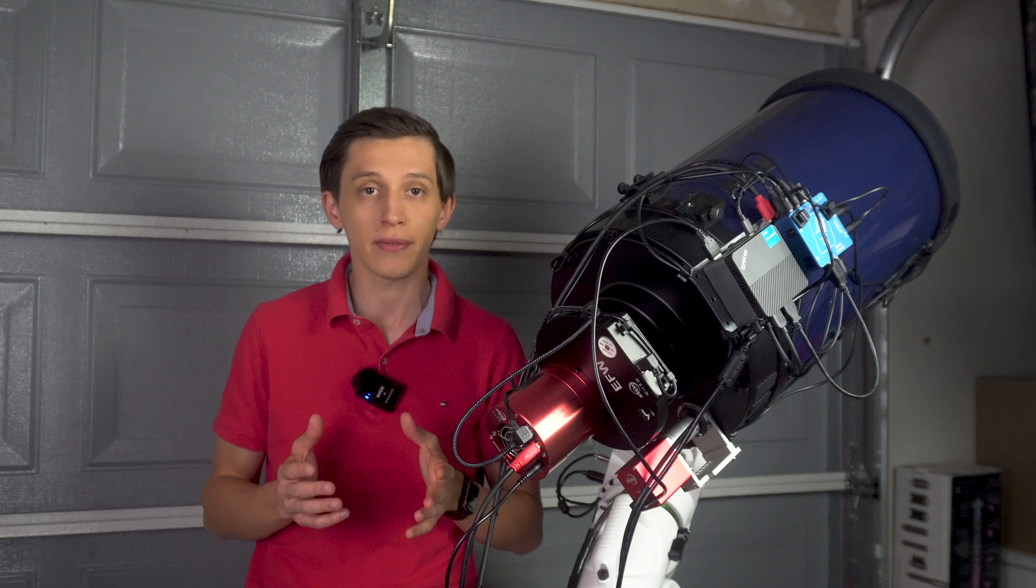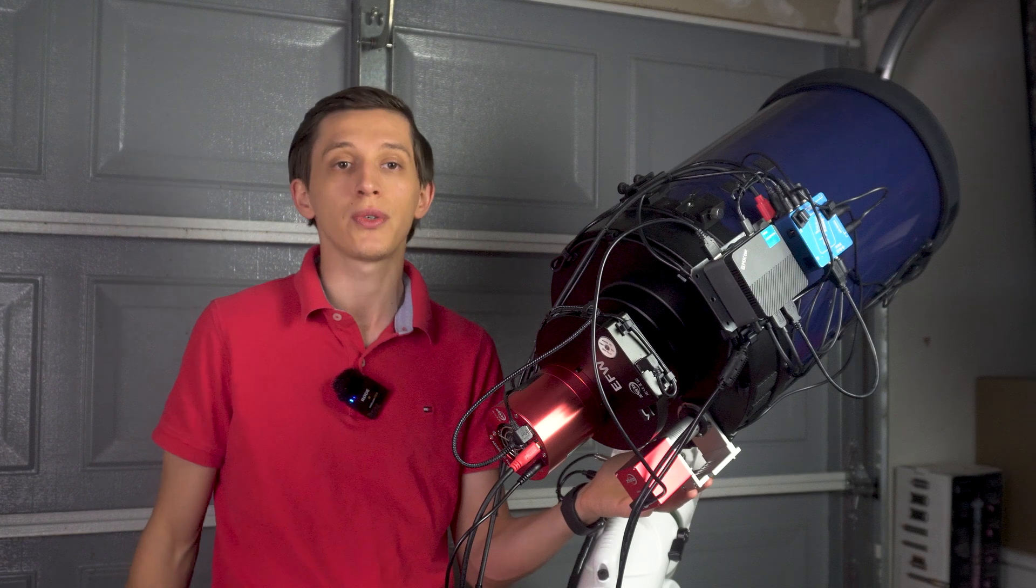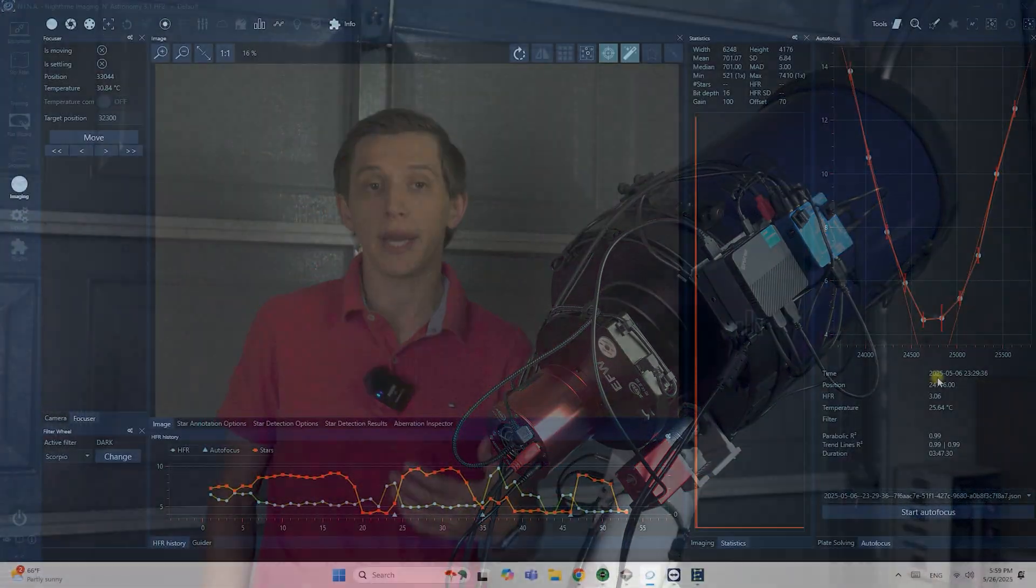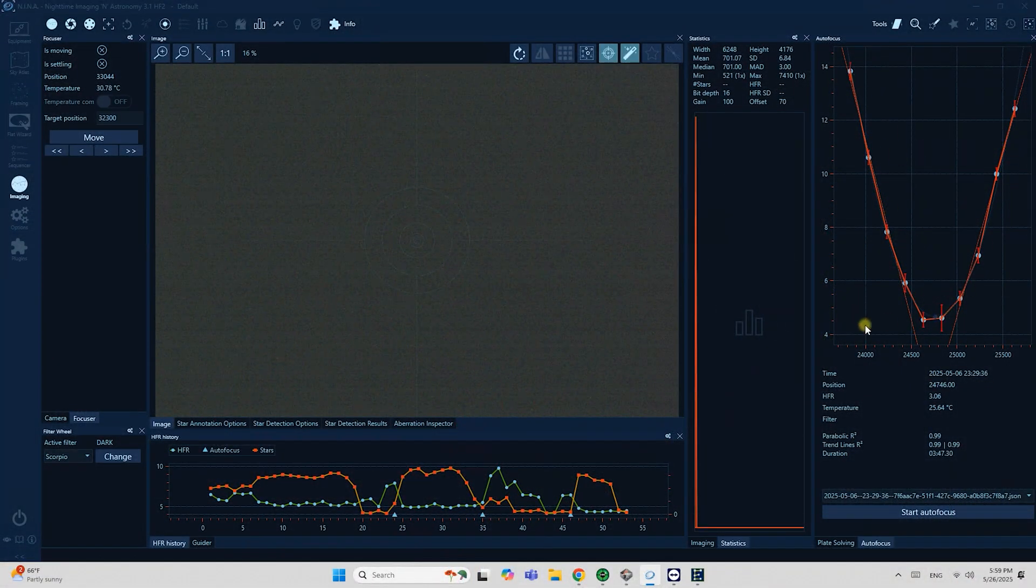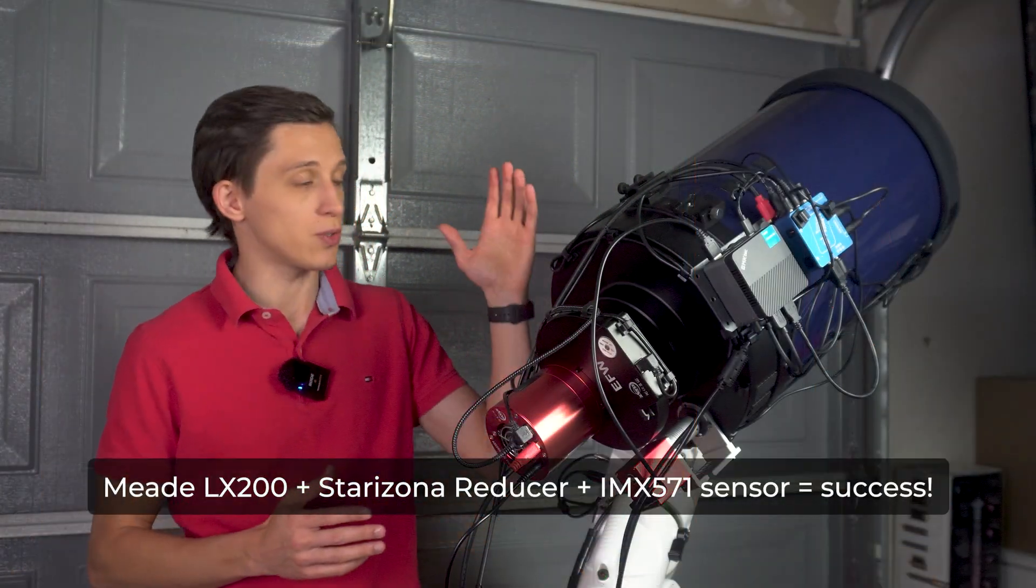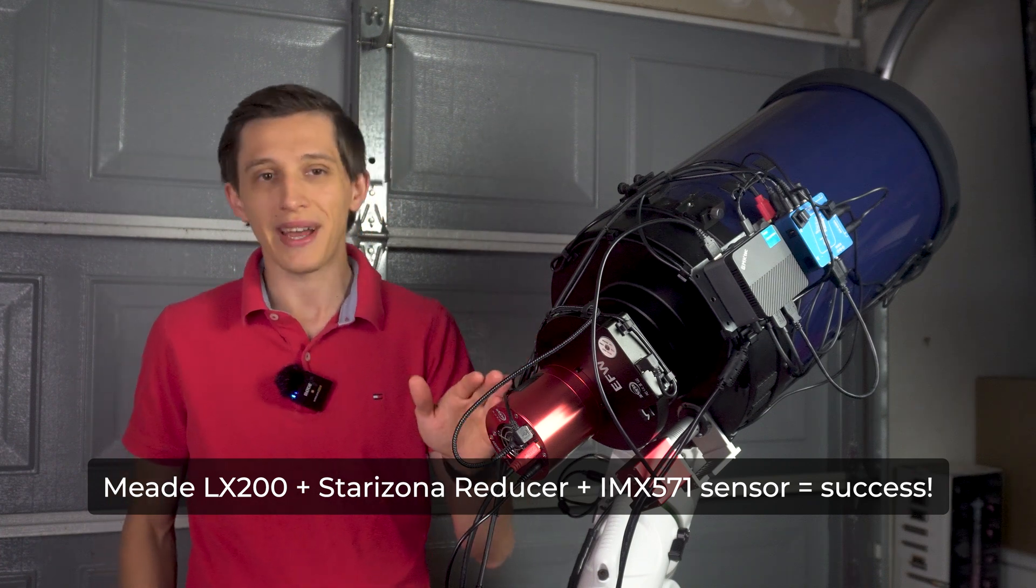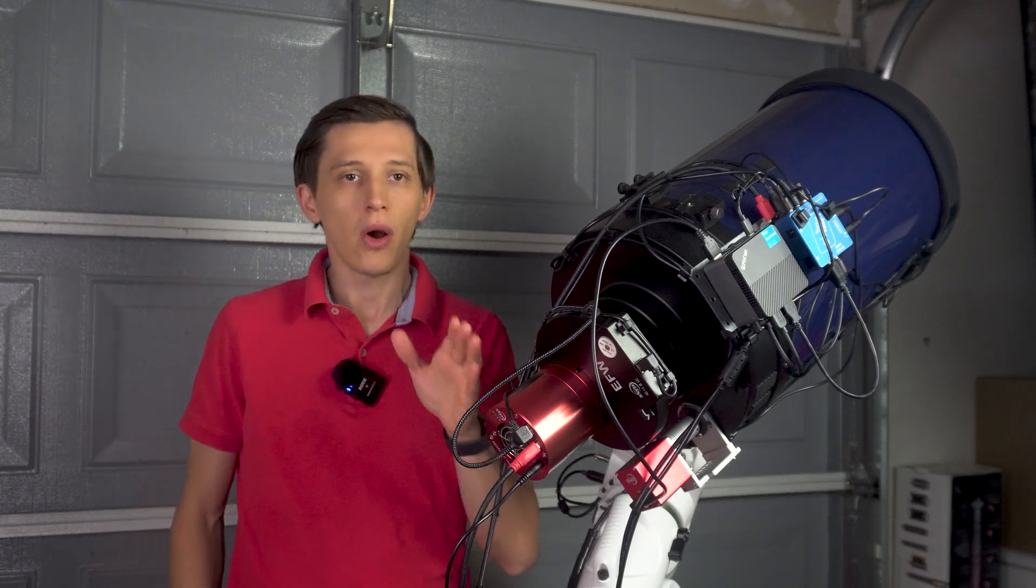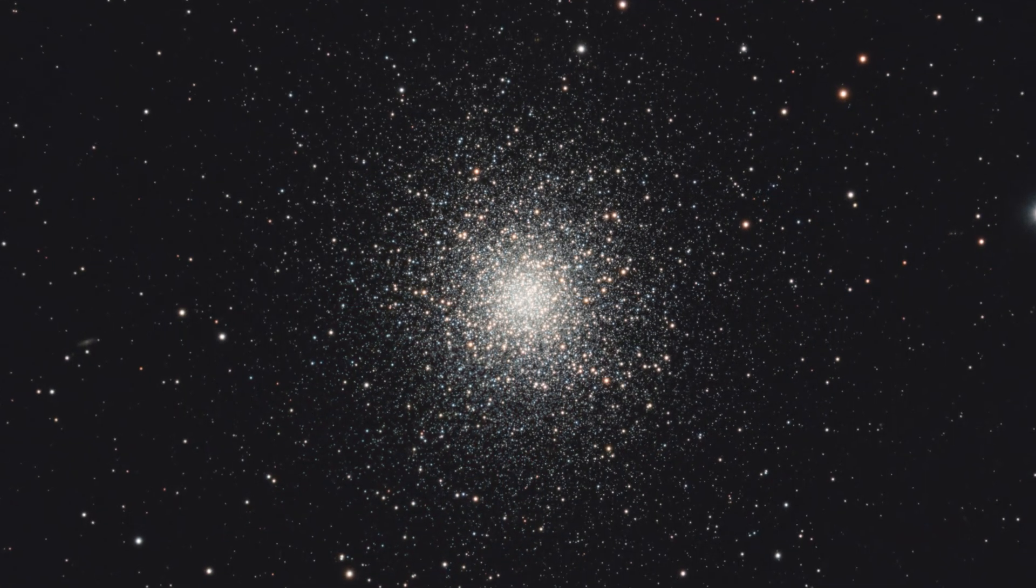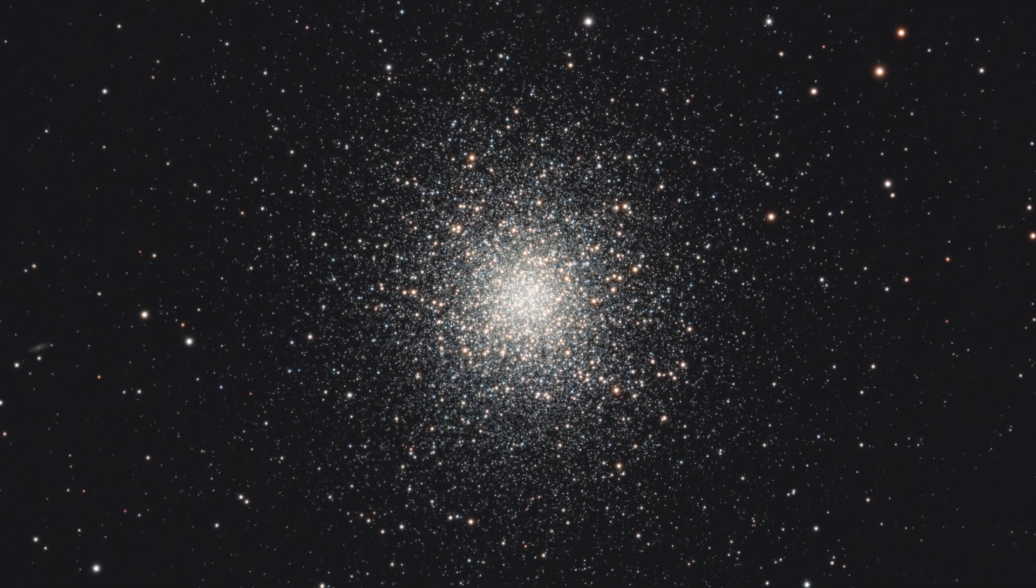In particular, I have a couple of achievements to share. First, my autofocusing routine is now done using the standard telescope focuser, and on screen you can see the curve that I get using it. Second, I was finally able to get my first images using the telescope itself, Starizona Schmidt-Cassegrain reducer, and IMX571 sensor. On the screen you can see one of my test images that I captured, and later in the video I will explain how I made this telescope work.